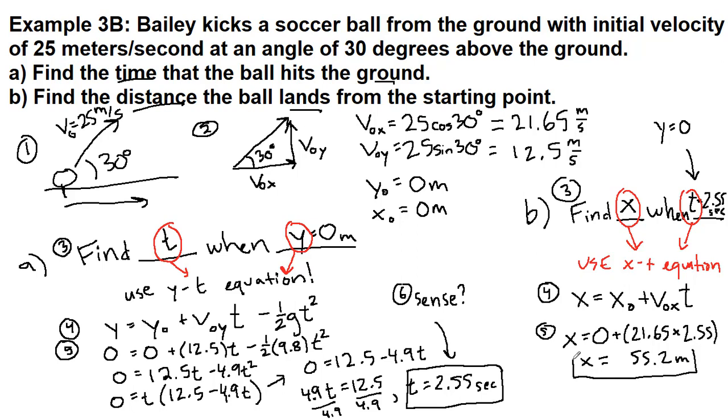You could round that to 55 meters, no problem. And our step six check of does this make sense? If we think about 55 meters, that's a portion of a football field or soccer field. And so that seems reasonable enough. Bailey kicked pretty hard. And so it will go a significant distance. But we're not talking about miles or anything. So that would be a yes, it does make sense.